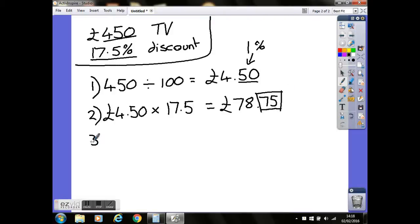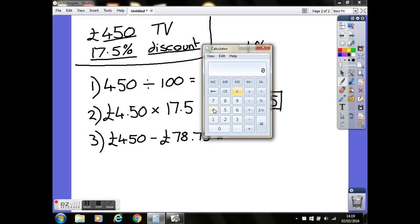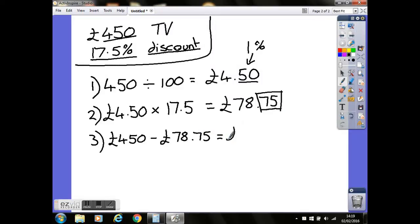The last step: because we're on a discount for this one, we're going to be taking this amount away. So we've got £450 minus our 17.5%, which is £78.75, equals £371.25. And there's the new price of our TV.